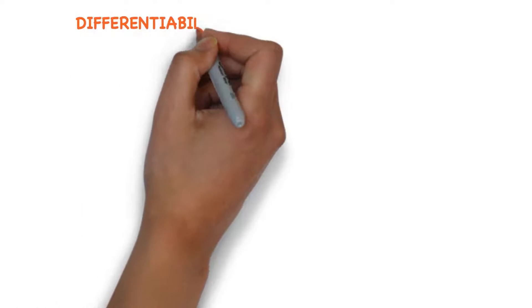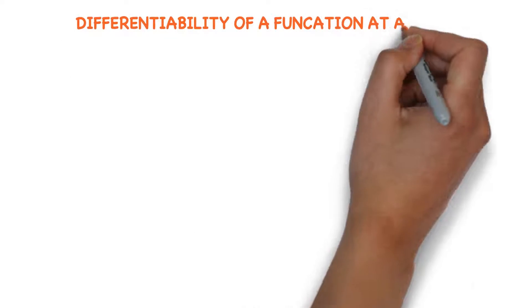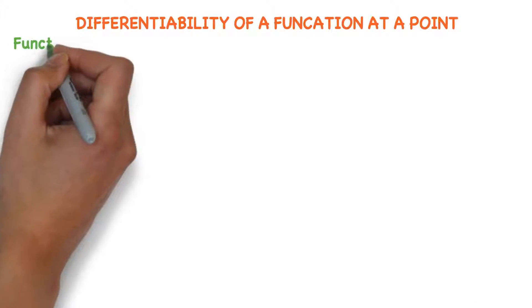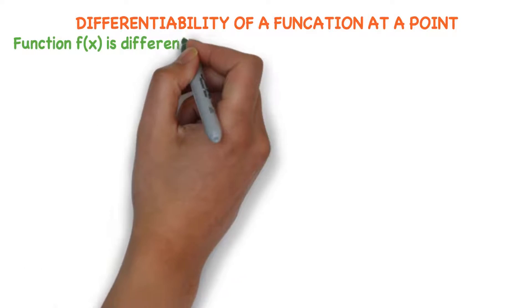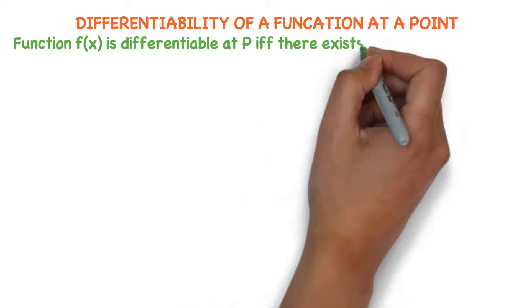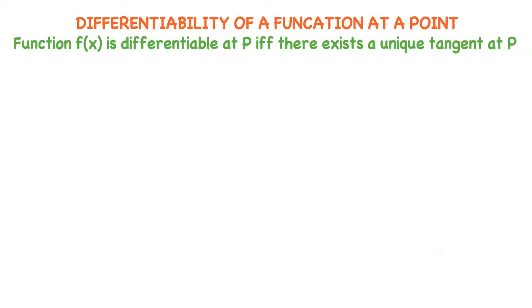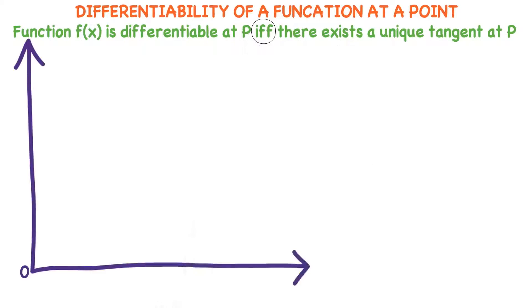Hi friends, welcome to PRMAX Class: Differentiability of a Function at a Point. When we say a function is differentiable at point P, it means there exists a unique tangent to the function y equals f(x) at point P. I already discussed this in the last class — this is a continuation of that. I want to quickly revise what we learned.